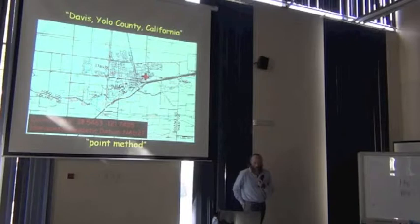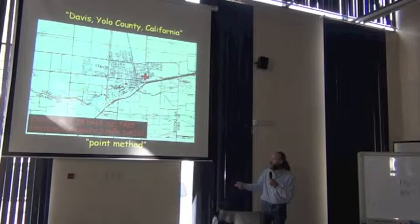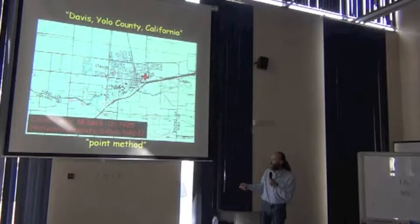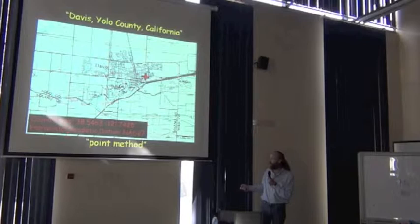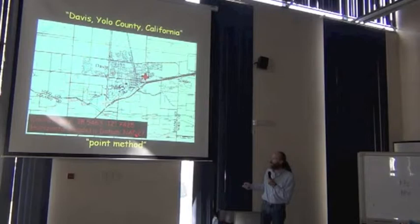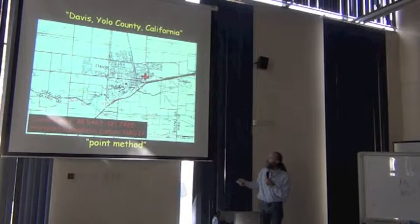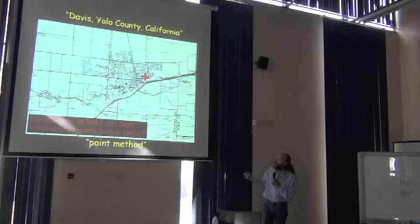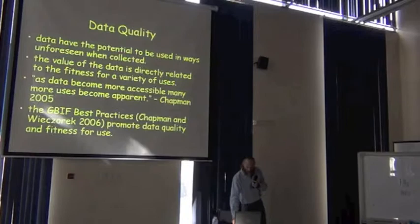Let me give an example. This is one way of georeferencing, which we call the point method. It consists of a coordinate pair — in this case, decimal latitude and decimal longitude. So we're in the Northern Hemisphere and the Western Hemisphere. And this thing called the geodetic datum. The combination of these three pieces of data — latitude, longitude, and datum — actually do describe a single point on the surface of the Earth. It happens to be at the center of this X.